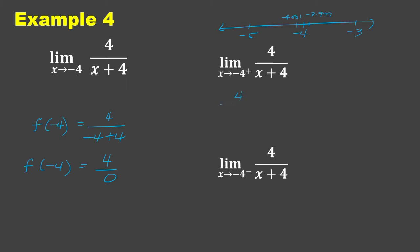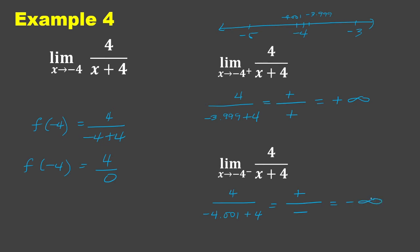From the right, we have 4 over (negative 3.99 plus 4): the numerator is positive over a positive answer, so positive divided by positive is positive infinity. For the left-hand side, we have 4 over (negative 4.001 plus 4): the numerator is positive over a negative answer, giving negative infinity. From the right is positive infinity and from the left is negative infinity. Therefore, the answer is does not exist.